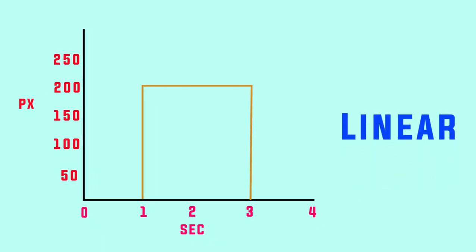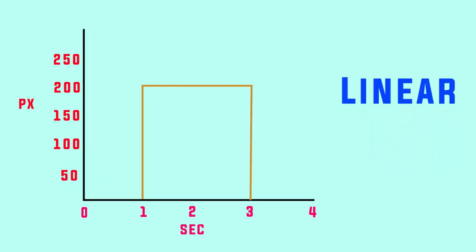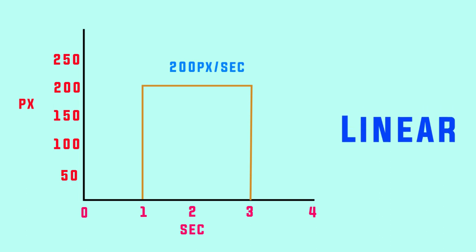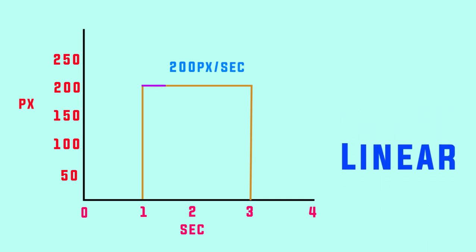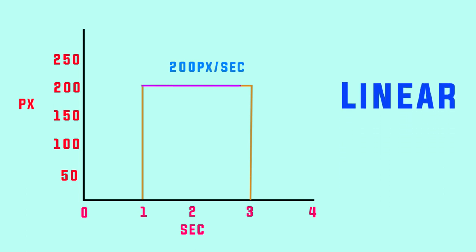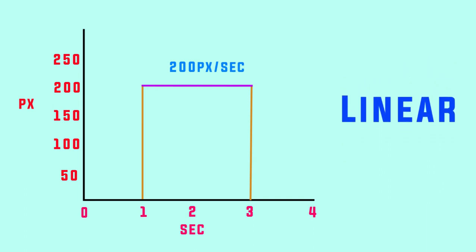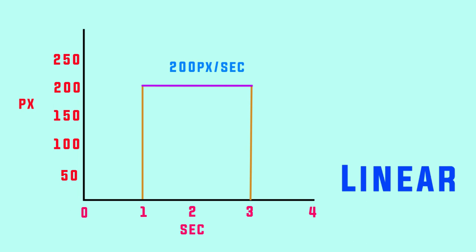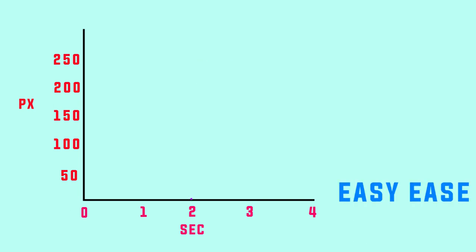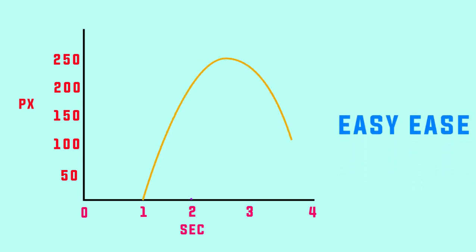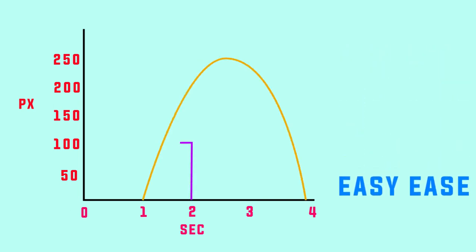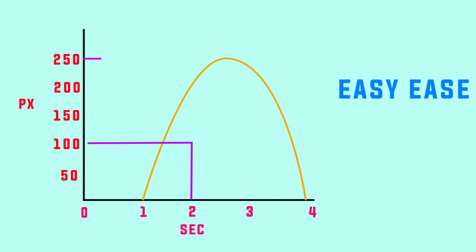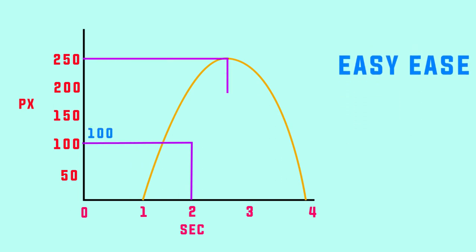First, it is linear. This is the graph editor and this is the animation. The speed is 200 pixels per second. This is the value of 200 pixels per second. This is the eases. This is the curve.